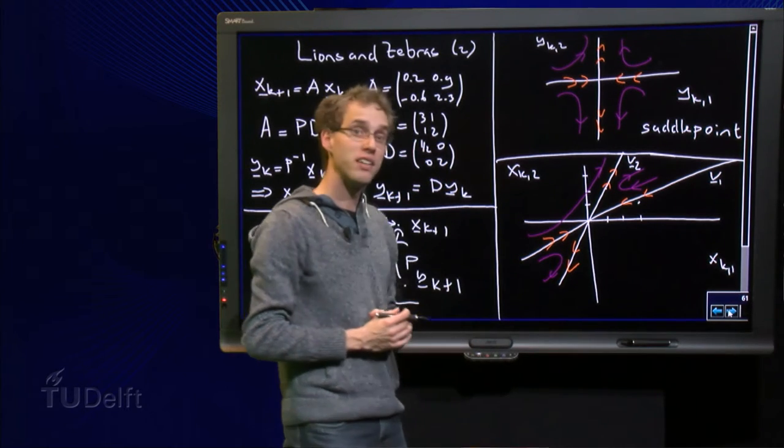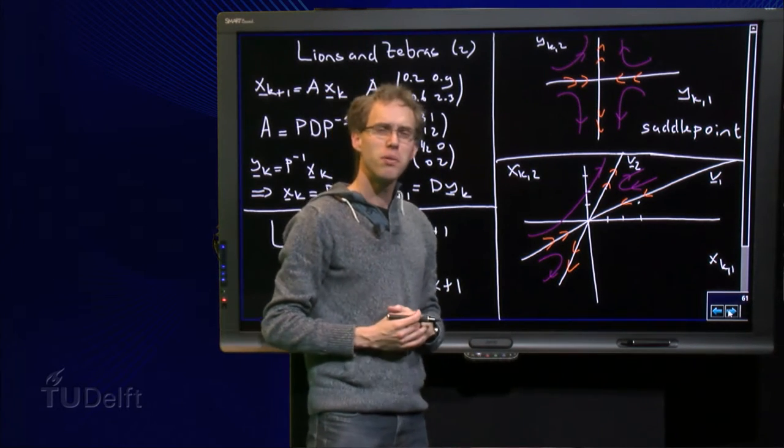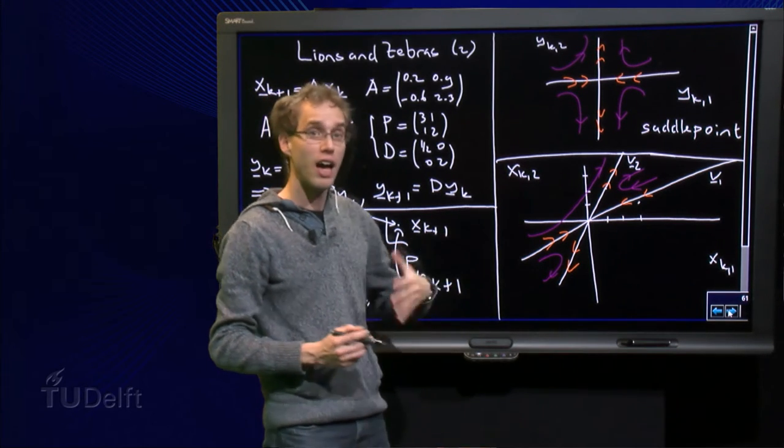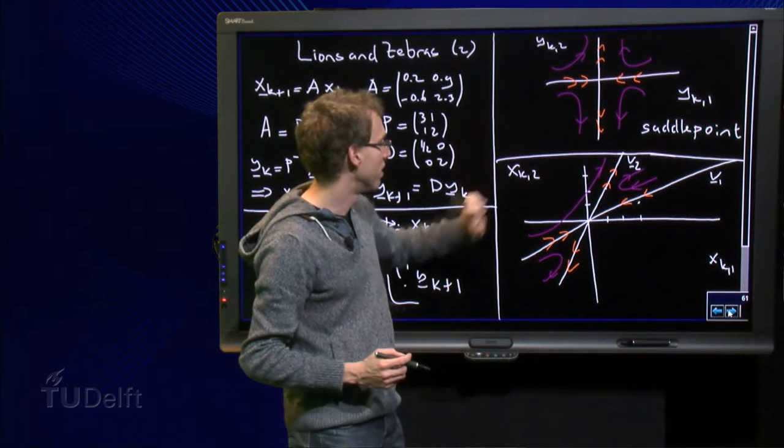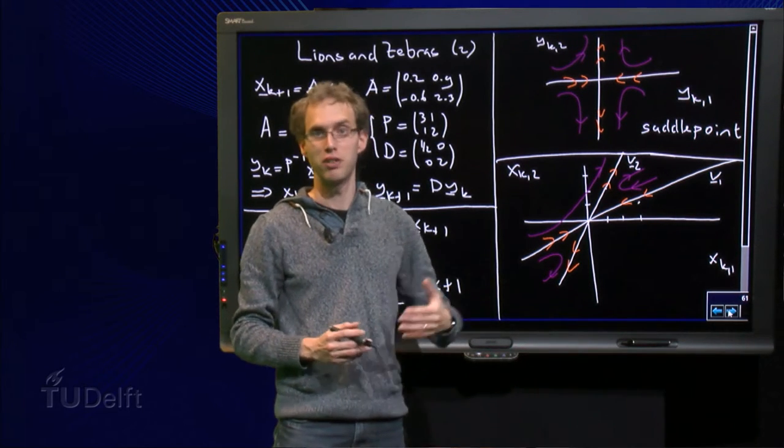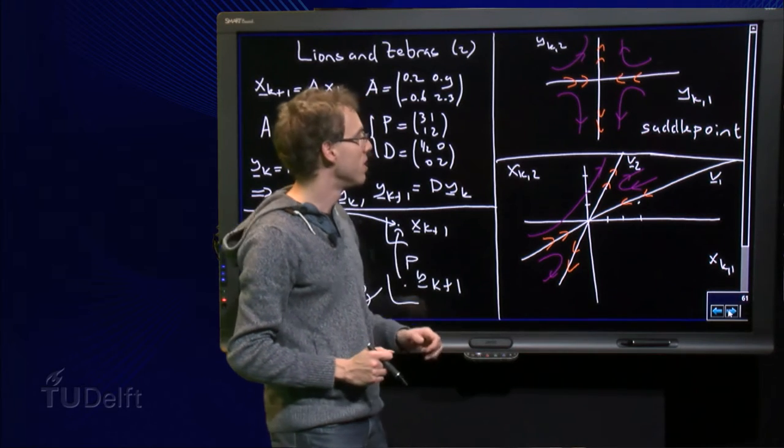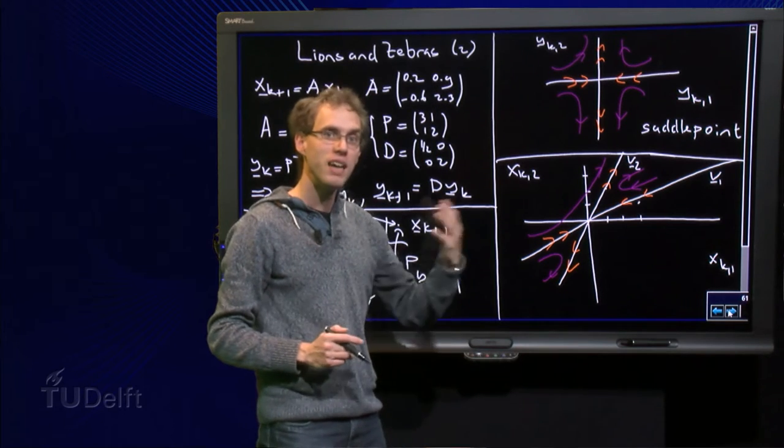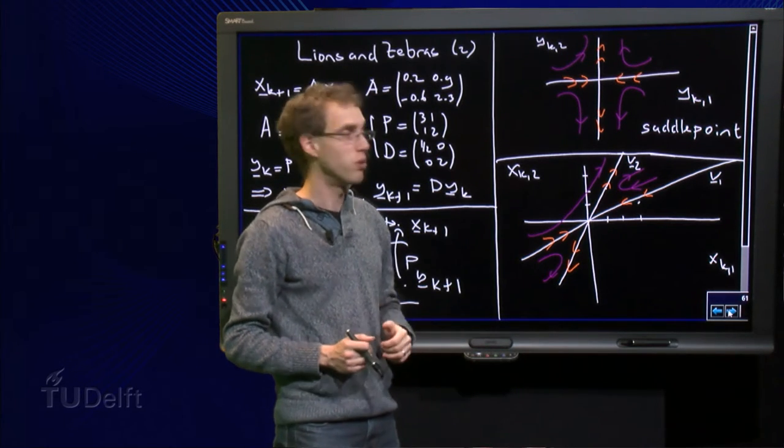So, we have almost completed our phase space. But then you might think that this is a bit odd, because now we have here negative lions, and here we have a negative amount of lions and zebras, which is of course unphysical. So, the only physical part is this first quadrant, so we are mainly interested in what happens in the first quadrant.